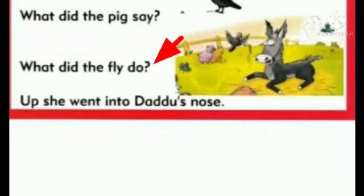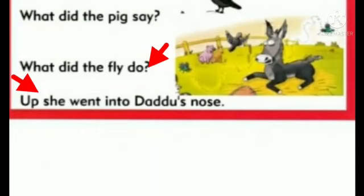Next sentence: The cow said moo moo. Next: The dog said bow bow. Next: Who said kaka? Next: What did the pig say? Next: What did the fly do? Up she went into the dew's nose.